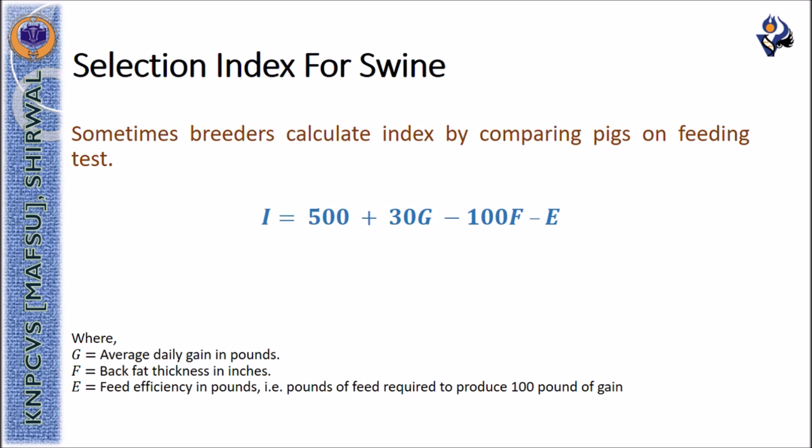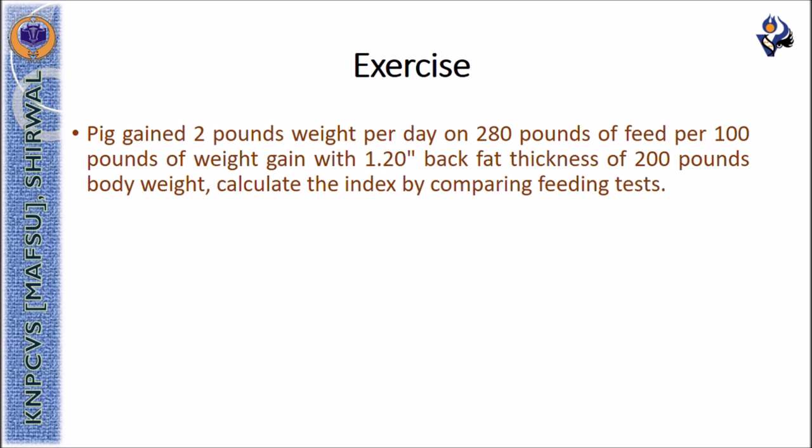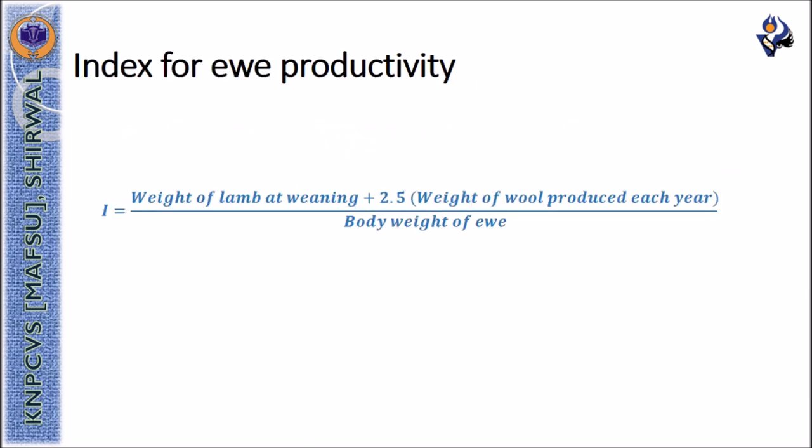The swine's selection index can also be calculated using the feeding test where index value is calculated as 500 plus 30G minus 100F minus E, where G is the average daily gain in pounds, F is the back fat thickness in inches, E is the feed efficiency in pounds. Based on this there is an exercise: if a pig gained two pounds weight per day on 280 pounds of feed per 100 pounds of weight gain with 1.2 inches back fat thickness at 200 pounds body weight, then calculate the index by comparing the feeding tests.